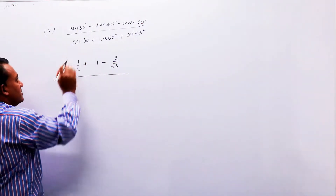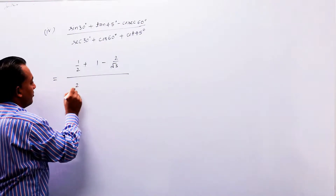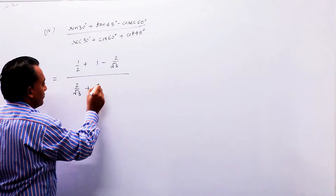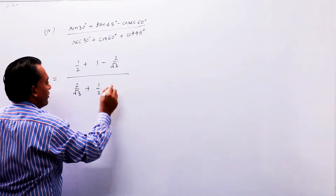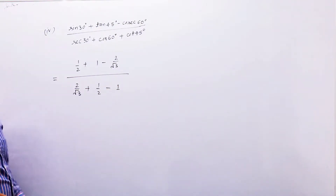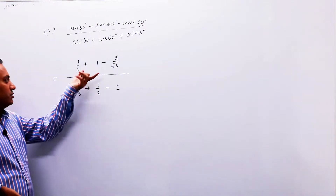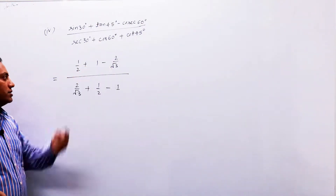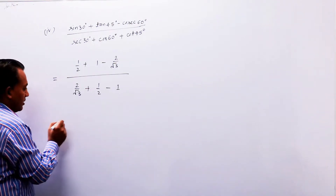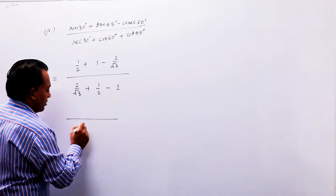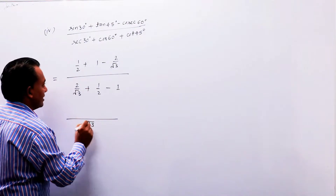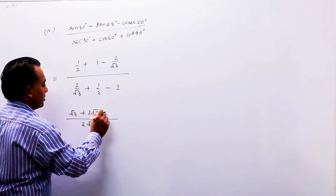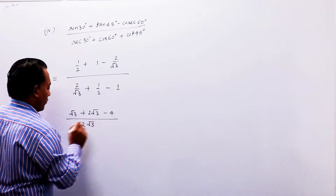Denominator में sec 30° = 2/√3, cos 60° = 1/2, और cos 45° = 1/√2। Numerator solve करते हैं बच्चों — यहाँ 2 और √3 है, LCM आएगा 2√3, तो हो जाएगा √3 + 2√3 minus 4।